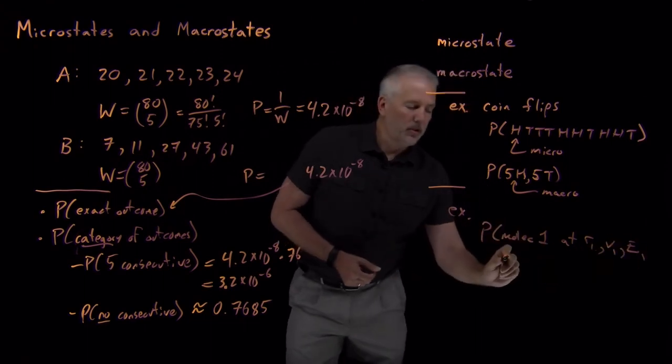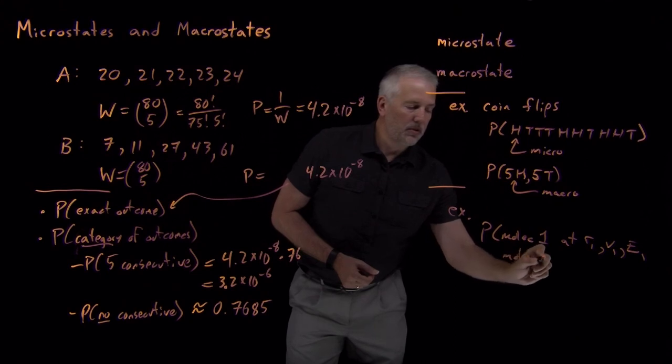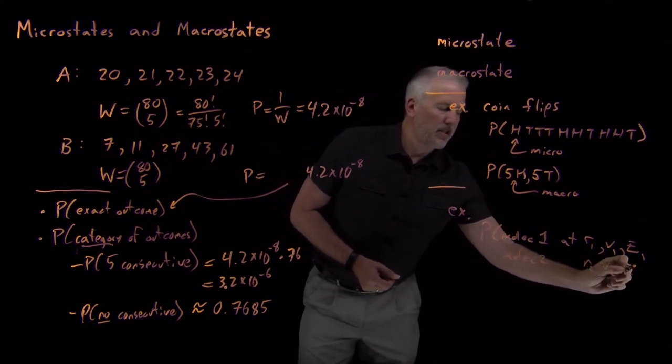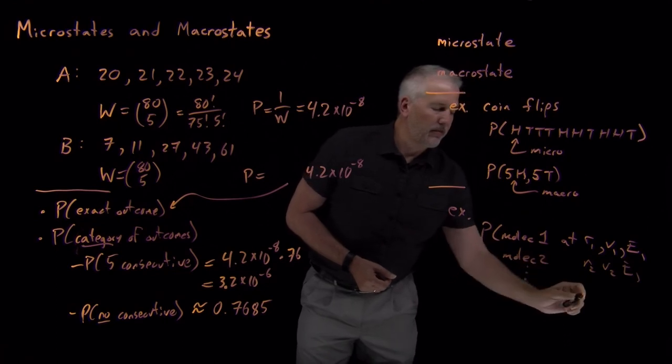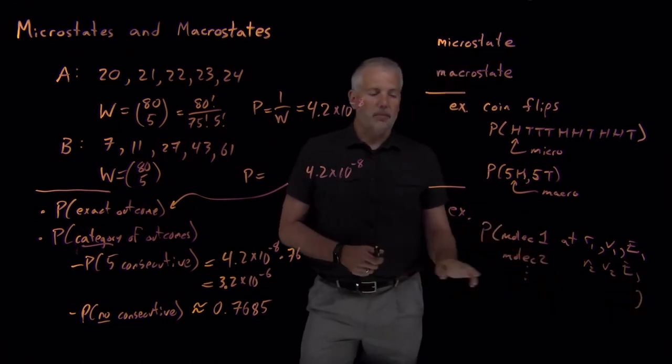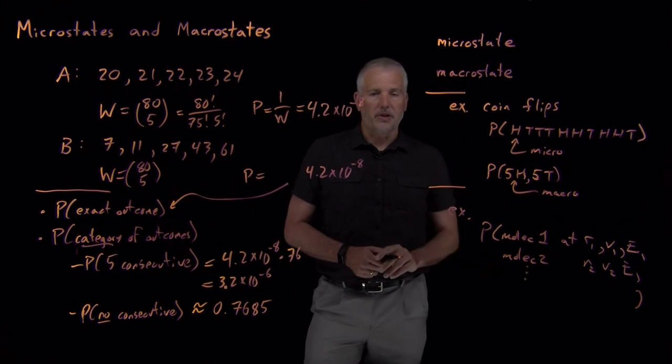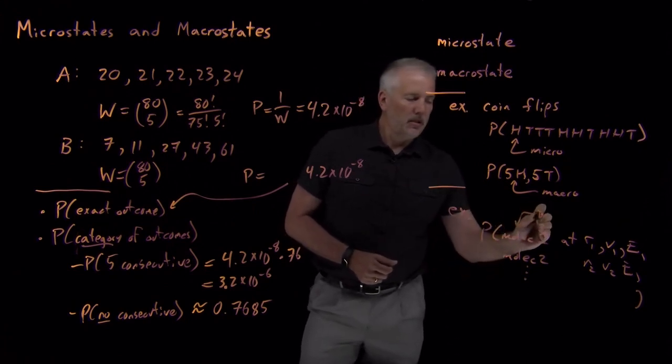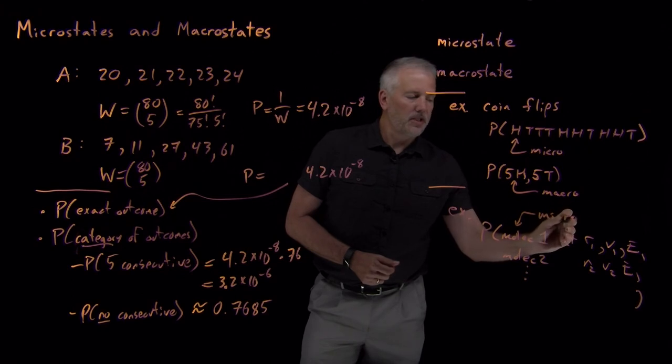And molecule number two has its own position, velocity, energy, and so on. So I've microscopically described the properties of every individual molecule in the system. That would be an example of a microscopically described state, a microstate.